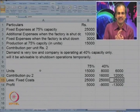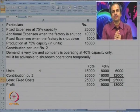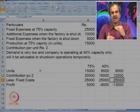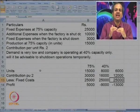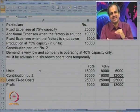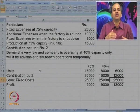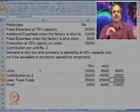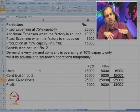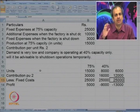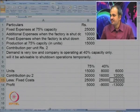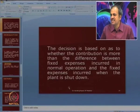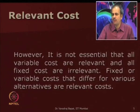The shut down point is that level of activity where it is better to shut down at that level and below that level. Only if we feel that demand is likely to be more than 6,000 units do we take a call to continue. Nobody would like to run at a loss — this is a temporary measure when demand is very low. I hope the shut down point issue is now very clear to you.